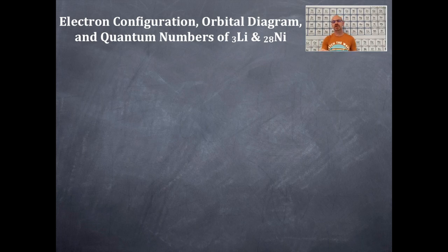So electron configuration, orbital box diagram, and quantum numbers for lithium and nickel. What I need you to do is pull out a periodic table. Find lithium on the periodic table. It's Z of 3. Find nickel on the periodic table. That's Z of 28. So we're first going to do lithium and then we're going to work ourselves into nickel.